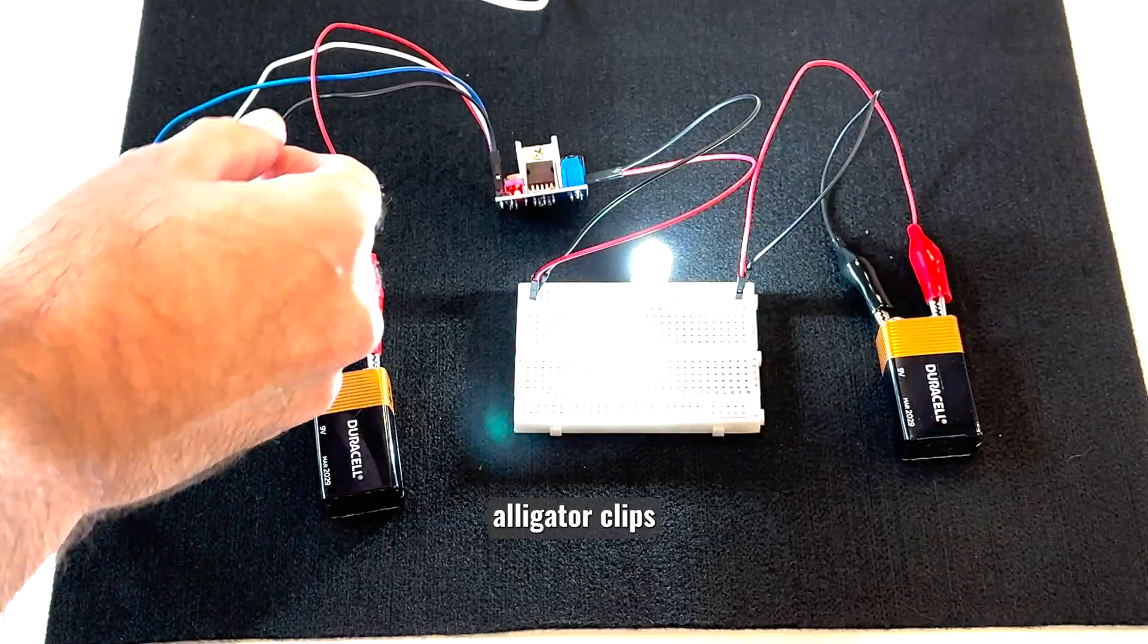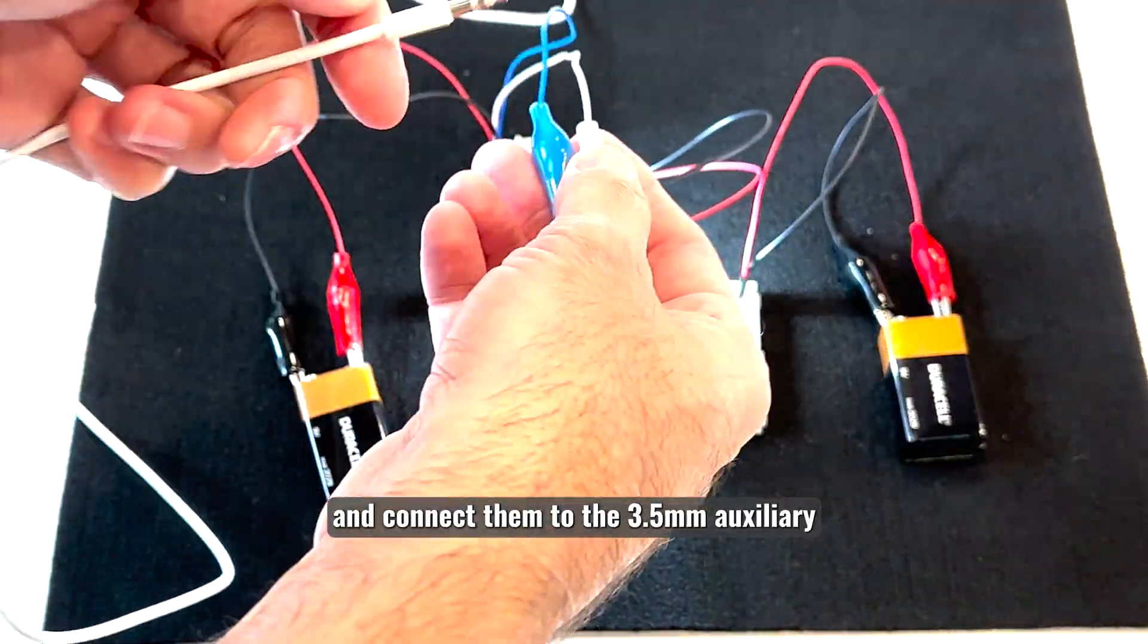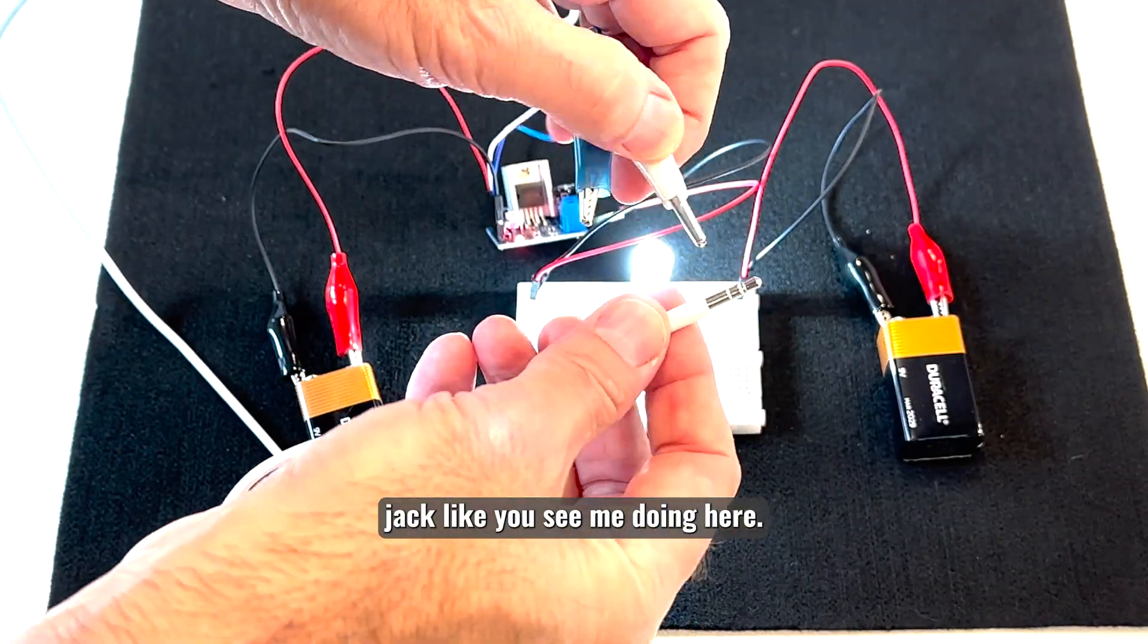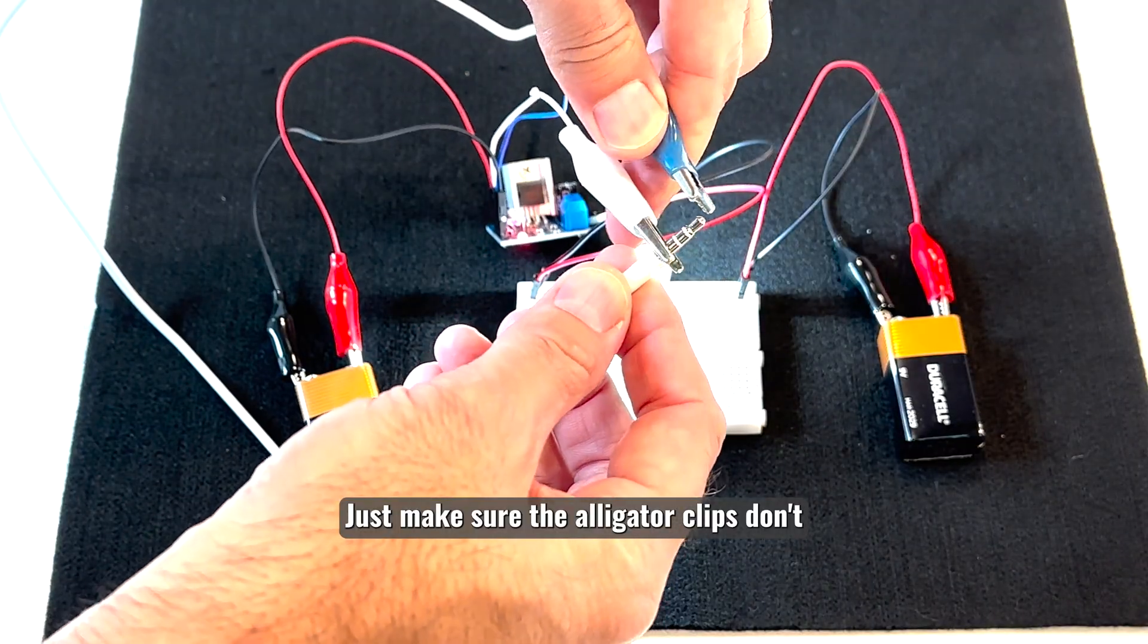Now, take the blue and white alligator clips and connect them to the 3.5mm auxiliary jack like you see me doing here. Just make sure the alligator clips don't touch one another.